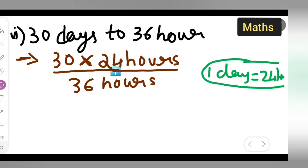Now hours will cancel out. We multiply 30 by 24. Let me calculate: 3 times 4 is 12, 3 times 2 is 6.